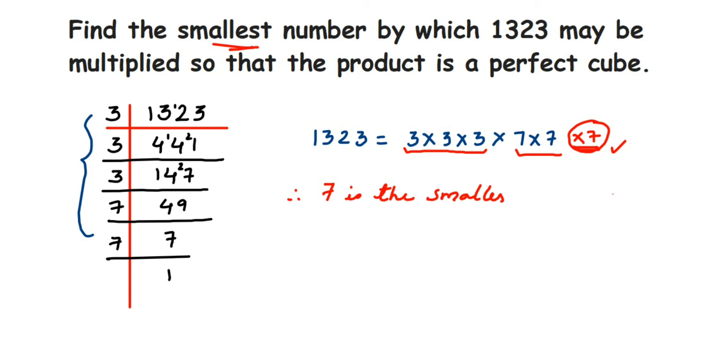It's very simple. Once you do prime factorization, find which prime factor is not forming a set of 3. The missing number to complete the set will be the smallest number to multiply.